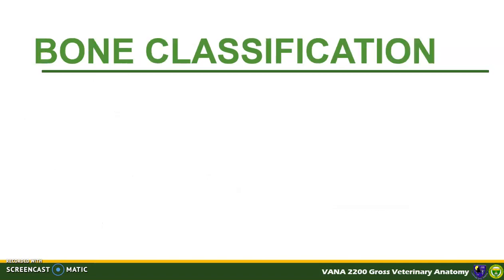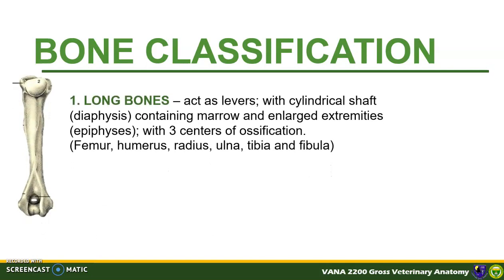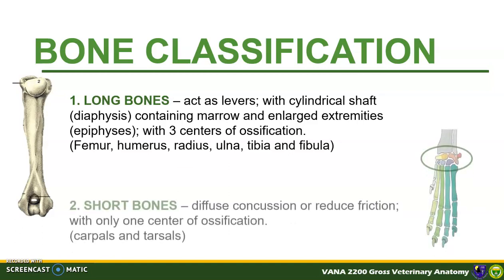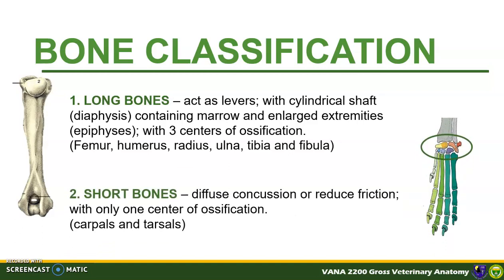Bones can be classified based on their general shape. Long bones are proportionally longer than they are wide; each has a central marrow cavity and a proximal and distal epiphysis. Examples of long bones include the femur and the humerus. Short bones are about as long as they are wide and each has only one growth center. Examples of short bones are the carpals and tarsals.